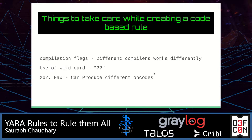Things to take care of while creating code-based rules: compilation flags differ because different compilers work differently. Use wildcards where you can. And one important thing to remember is that XOR and DIX can produce different opcodes, so write your rules accordingly.